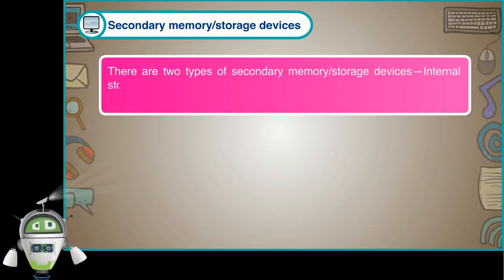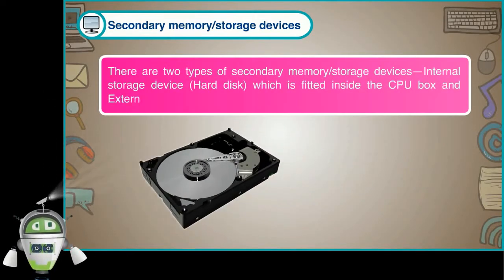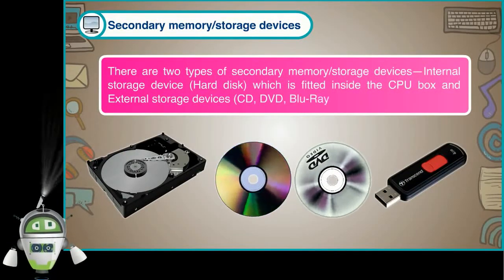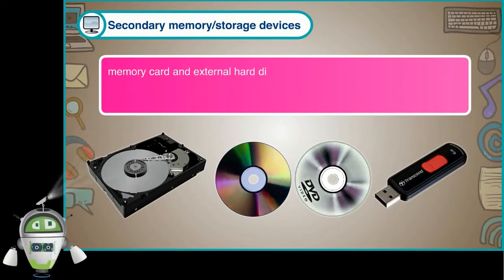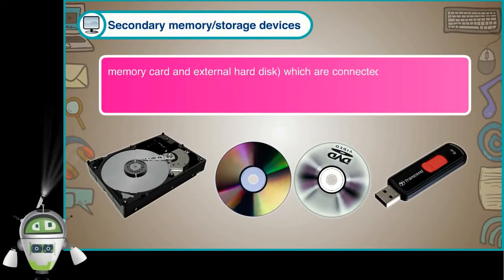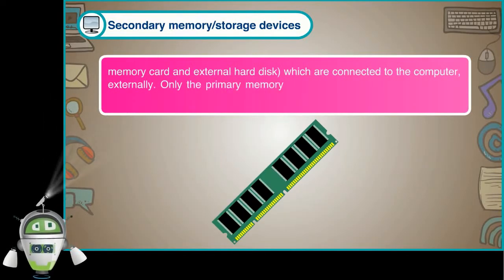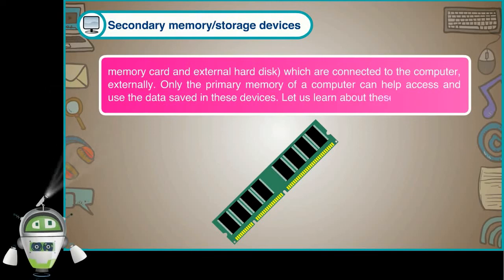The first type is internal storage devices, such as the hard disk, which is fitted inside the CPU box. The second type is external storage devices, which include CD, DVD, Blu-ray disk, pen drive, memory card and external hard disk — all of which are connected to the computer externally. Only the primary memory of a computer can help access and use the data saved in these devices. Let us learn about these devices.